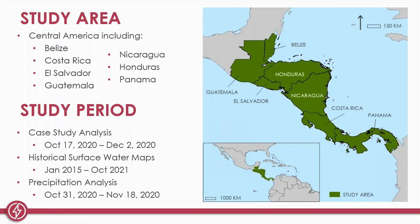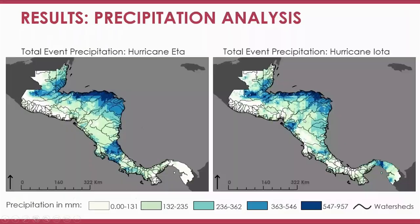The project examined numerous countries in Central America. For the case study analysis, focus was placed on countries most impacted: Guatemala, Honduras, Nicaragua, and El Salvador. The study period for the case study was October 17th through December 2nd, 2020, to highlight flooding during both events and the flood impact in the following weeks. Precipitation maps were generated for each hurricane event — the coastal areas of Honduras and Nicaragua facing the Atlantic were exposed to the highest amounts of precipitation.